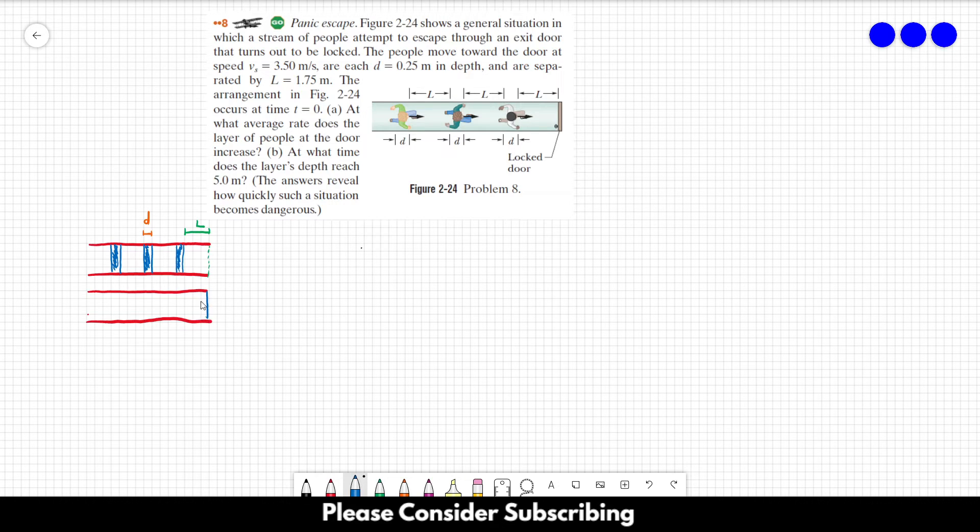The first person is here and the second person walks by L as well, so it reaches this position over here. Now the second person is in this position and the third person is in this position over here.